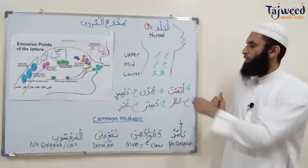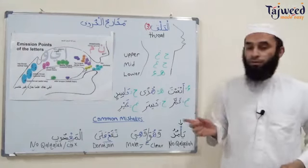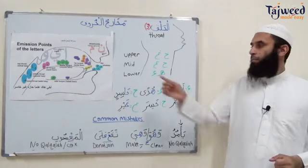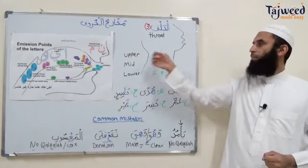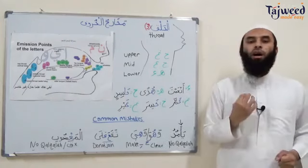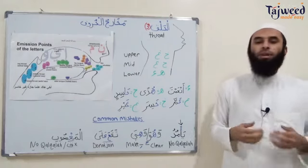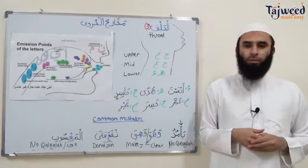So we have two letters in the lower part of the throat: hamza and ha. Middle part of the throat: ha and ayn. And upper part of the throat: kha and ghayn.